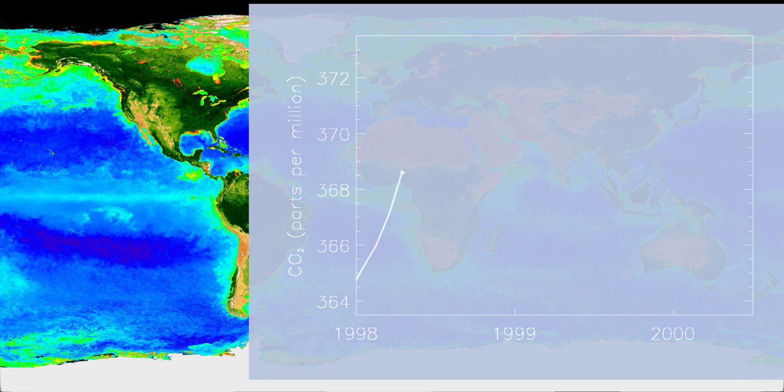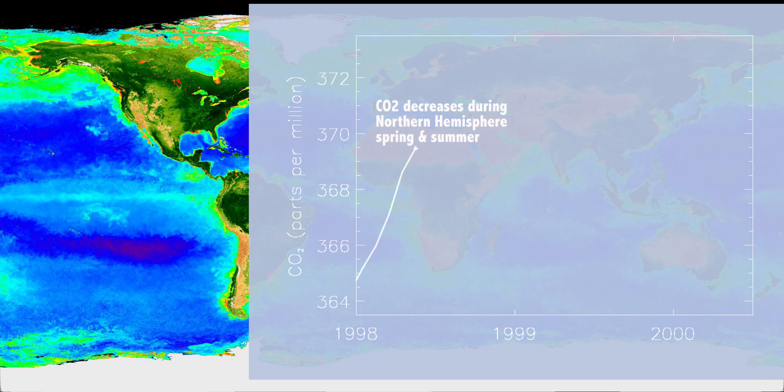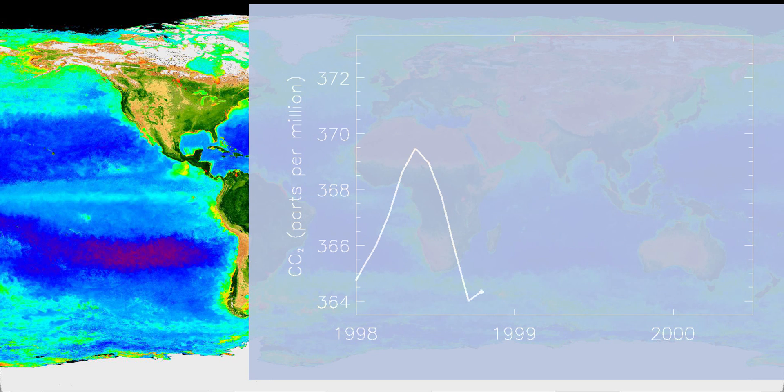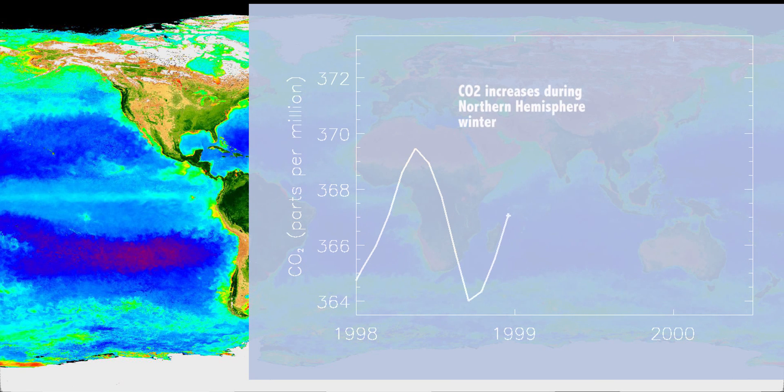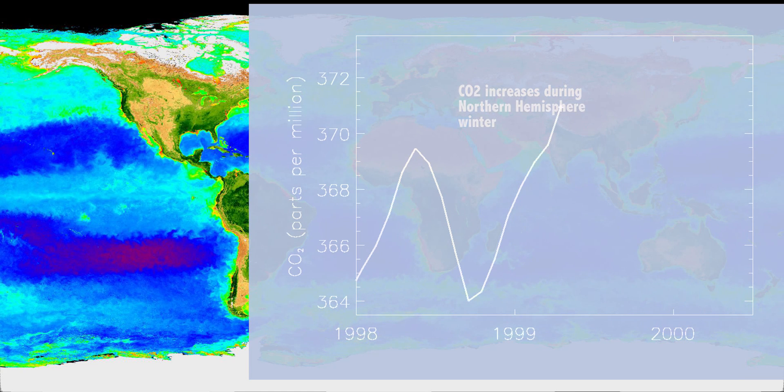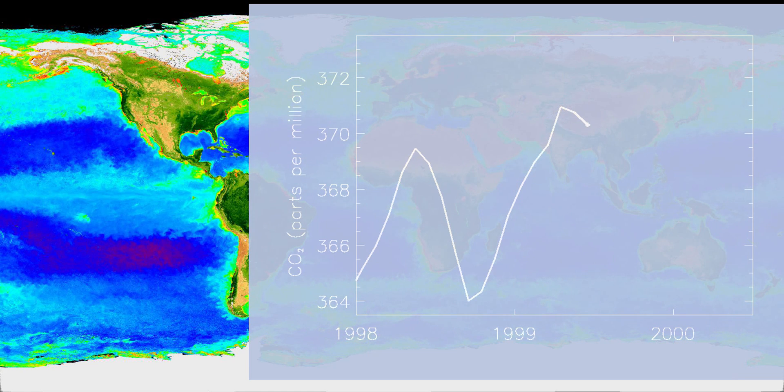The Mauna Loa CO2 curve goes down in the Northern Hemisphere spring and summer, when a vast abundance of plant life is using carbon dioxide in photosynthesis, and the curve goes up in winter, when many plants are dormant and no longer photosynthesizing, but animals are still exhaling CO2.